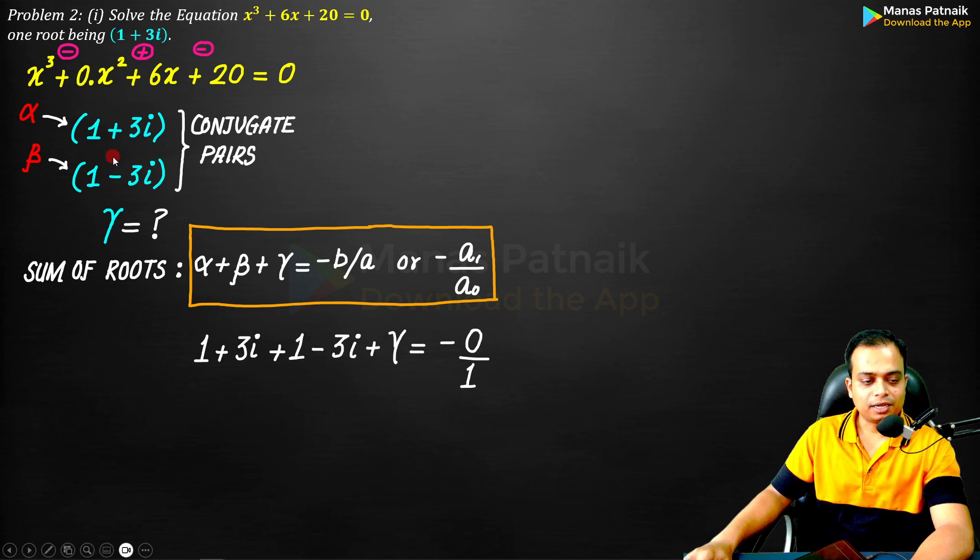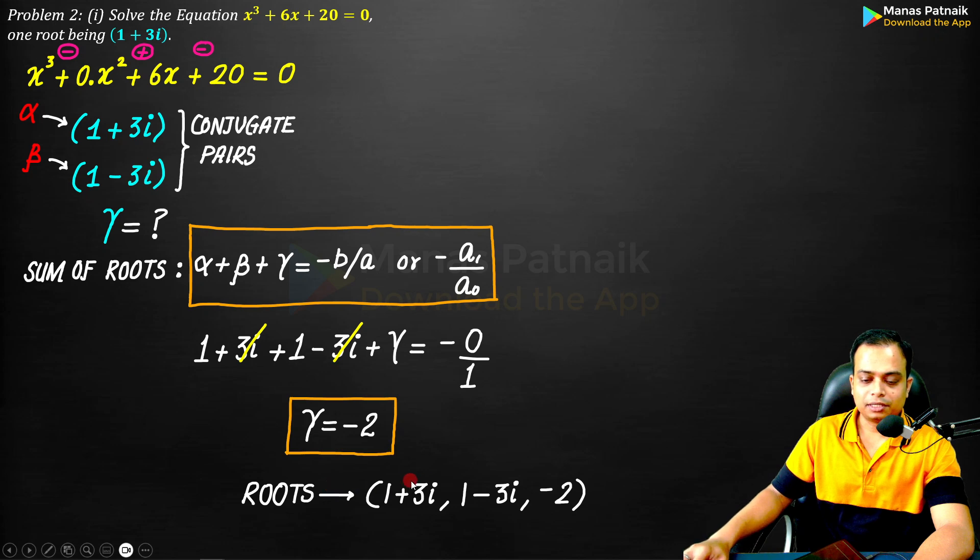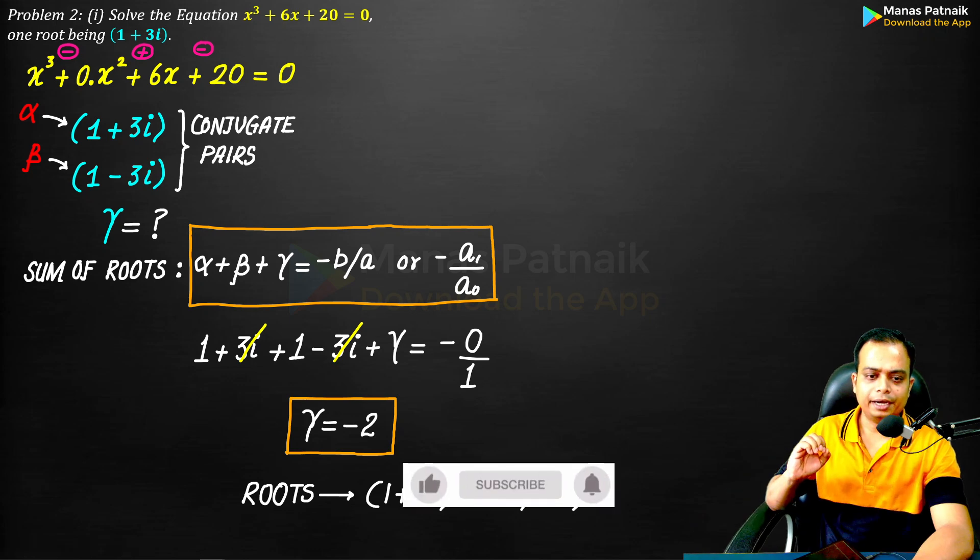Sum of the roots: 1 + 3i, 1 - 3i, plus gamma equals -0/1. 3i and 3i will cancel each other out. 1 + 1 is 2. So gamma will be equal to -2. So the roots are 1 + 3i, 1 - 3i, and -2. A very simple problem indeed.